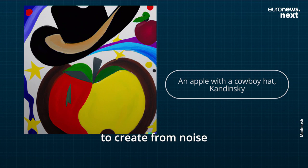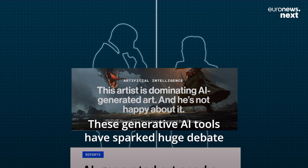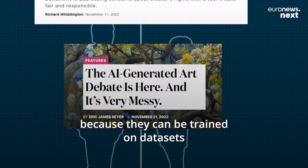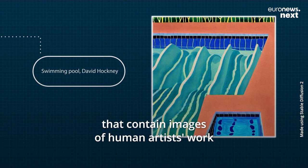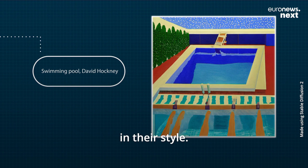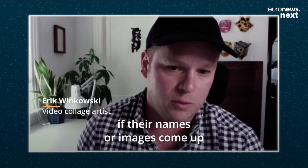These generative AI tools have sparked huge debates among artists and critics because they can be trained on datasets that contain images of human artists' work, potentially letting anybody create new work in their style. I think we're going to have to figure out either a way for artists to get compensated if their names or images come up in the datasets, or for them to just completely opt out if they don't want anything to do with it. If a brand campaign is obviously appropriated from a person's artwork, whether it was made with AI or otherwise, it's just not a good thing.